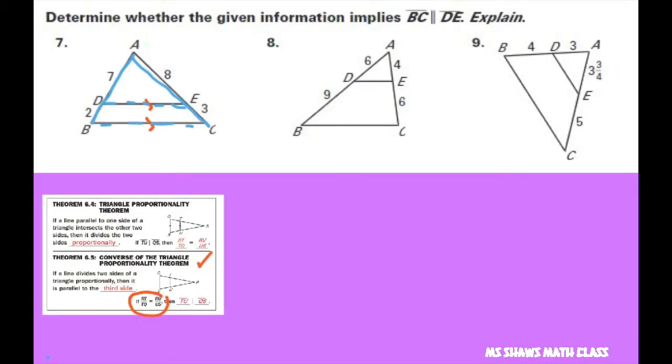So let's check. We're going to do 2 is to 7 as 3 is to 8. Since we can't reduce that, these are not proportional so these are not parallel. I'm going to erase them in fact. They're not parallel.